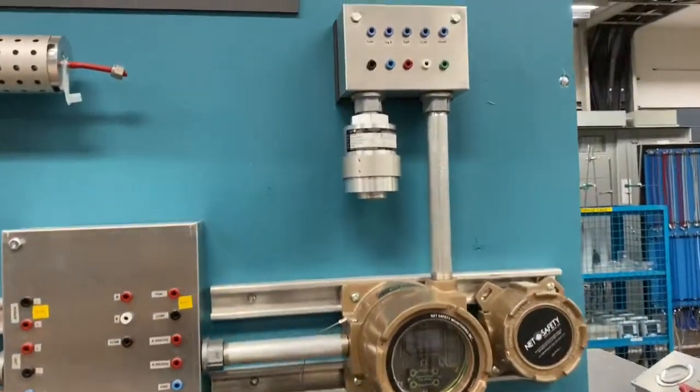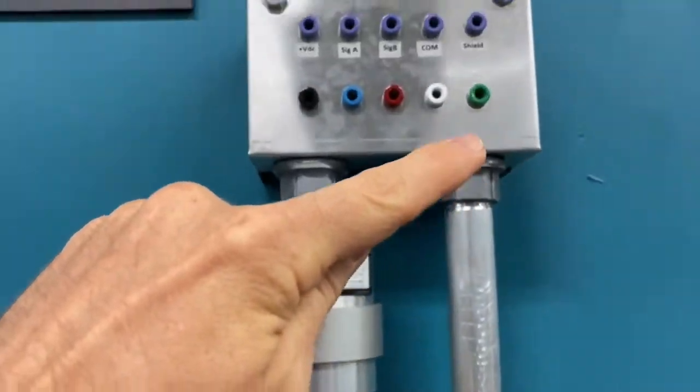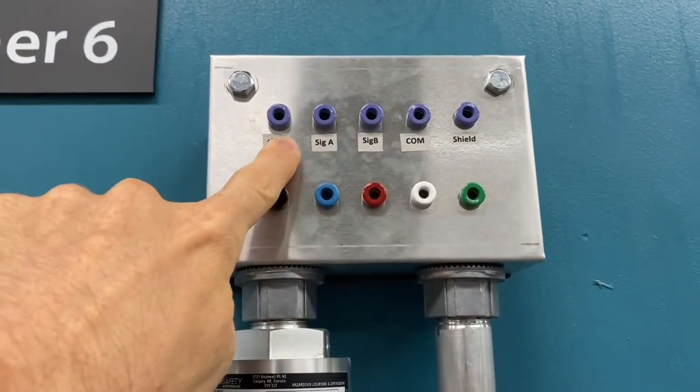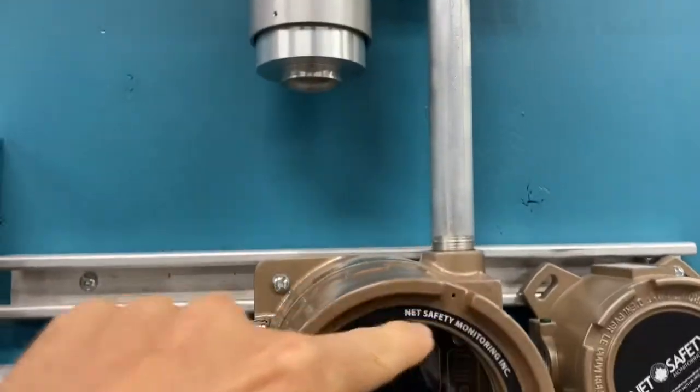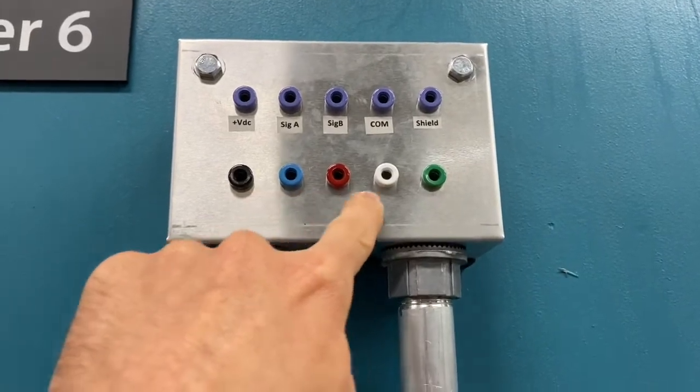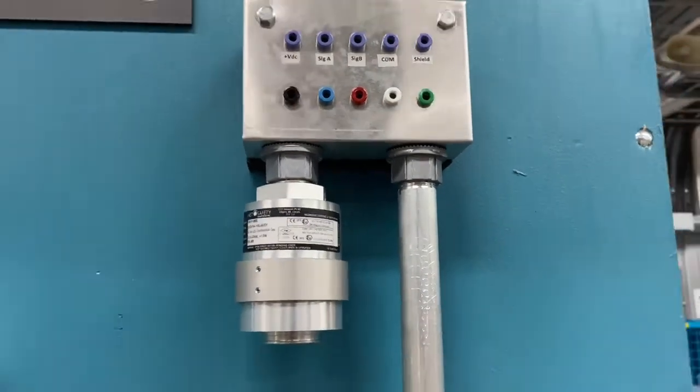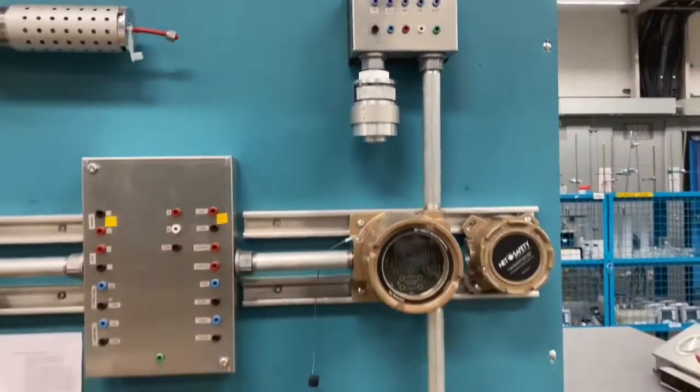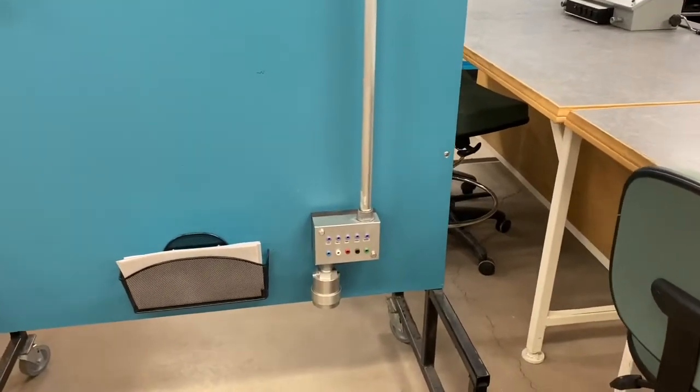For the sensors, we have one sensor up here. You can see for the sensors, there's wiring that runs up through this conduit, and the purple banana jacks here are coming from the controller. These connectors are color-coded to the wires from the sensor in the Net Safety sensor. I'm not going to tell you which sensor is which. We've got them mounted appropriately, one up high and one down low, and that's going to be part of one of the questions in the lab.